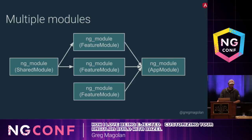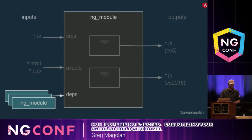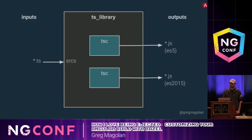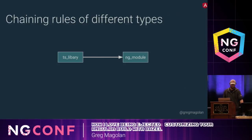For example, you may have an app module which depends on multiple feature modules, and some of those feature modules may depend on a shared module. To chain rules together, you use the deps attribute. For ng-module, the list of deps may include other ng-module rules, or really any rule whose output conforms to the inputs that ng-module expects. Another such rule is ts-library, which compiles a set of TypeScript sources using TSC and generates the same ES5 and ES2015 outputs that ng-module does. Because the outputs of ts-library agree with what ng-module expects from its dependencies, these two rules can be chained together.